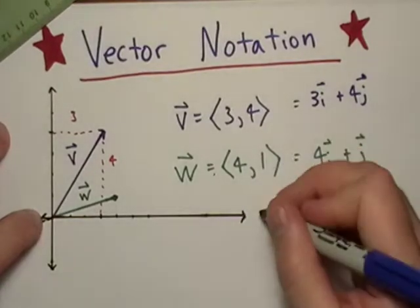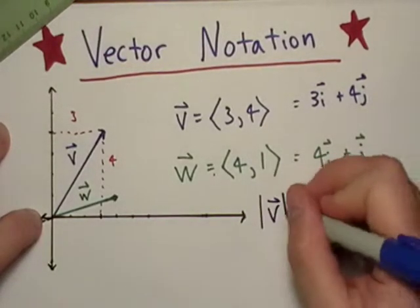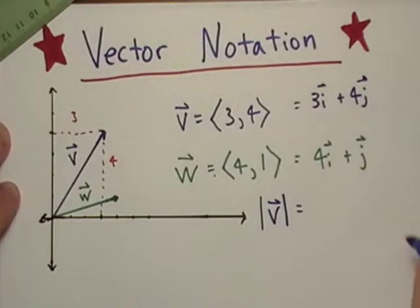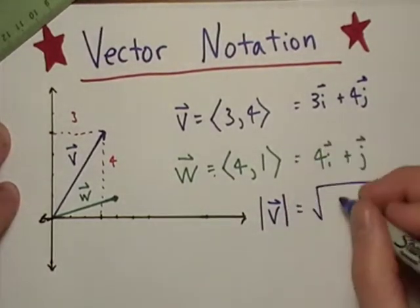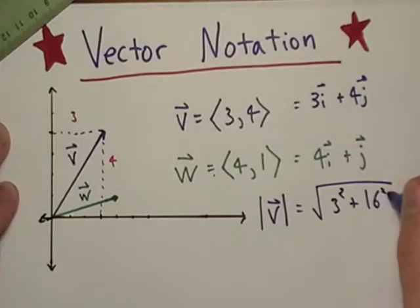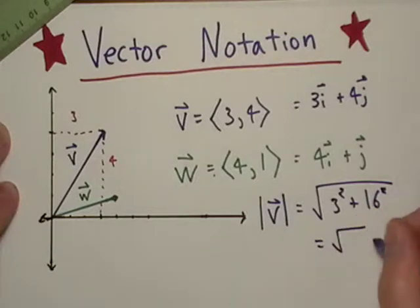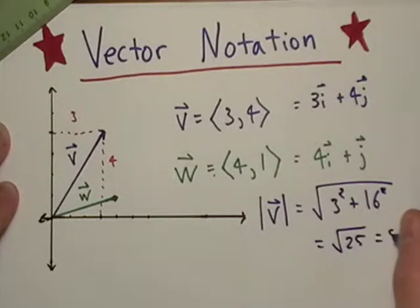That tells us how long it is. Vector v, and here's the notation: ||v|| equals √(3² + 4²). That's √(9 + 16), so it equals √25, which is 5.